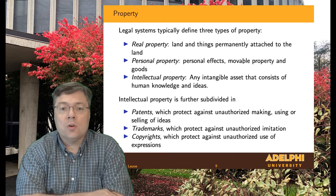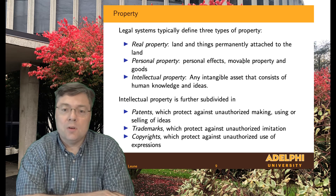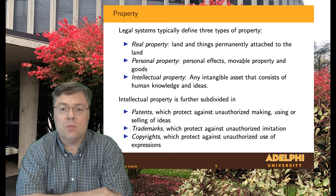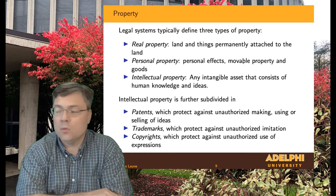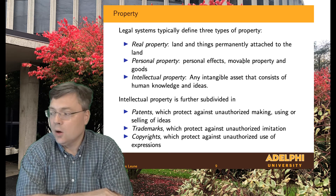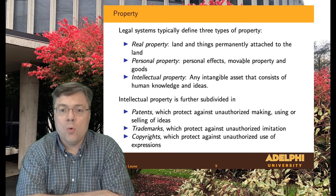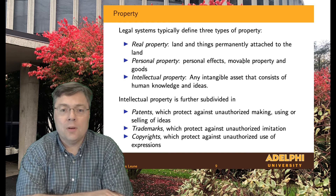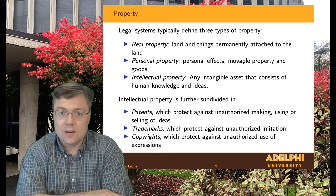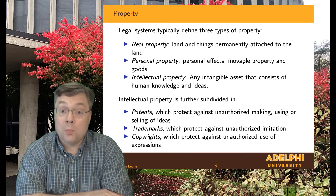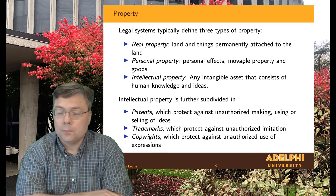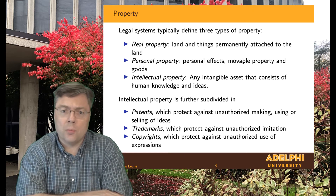That brings us to the third category: intellectual property, which is property that you cannot see. It is really the manifestation of an idea in someone's head. Specifically, intellectual property can be further subdivided into three subcategories: protection of an idea itself, of an expression, or of some form of a mark.